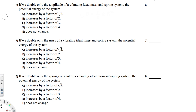Hey, what's going on guys? Let's do these problems. The first question is asking: if we double only the amplitude of a vibrating ideal mass-and-spring system, what will happen to the potential energy of the system?